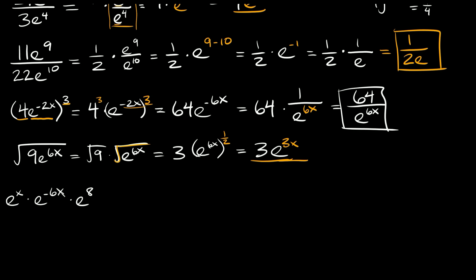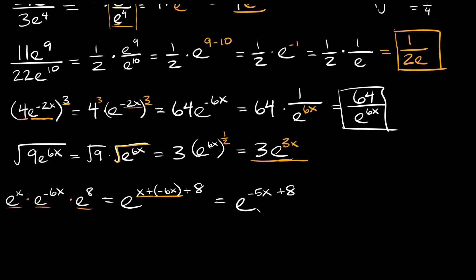Now let's do one more. We have e raised to the x times e raised to the negative 6x times e raised to the eighth. We have all the same bases and we're multiplying, so we just add the exponents together. This is equal to e raised to the x plus negative 6x plus 8. Now x plus negative 6x is the same as x minus 6x, which is negative 5x, so we have e to the negative 5x plus 8. You can also flip those to write it as e raised to the 8 minus 5x — either one works.